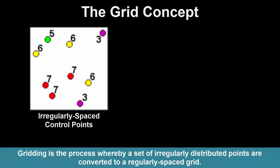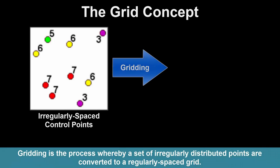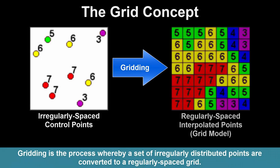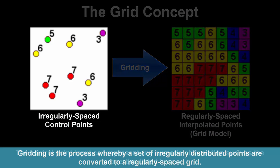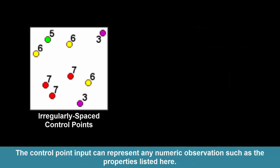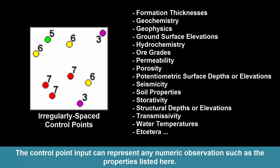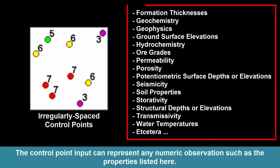Gridding is the process whereby a set of irregularly distributed points are converted to a regularly-spaced grid. The control point input can represent any numeric observation such as the properties listed here.